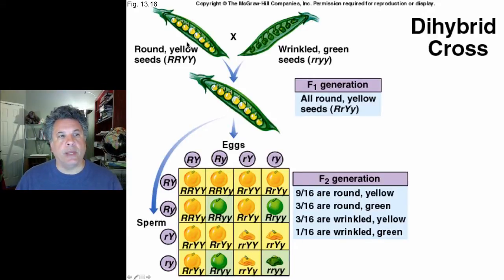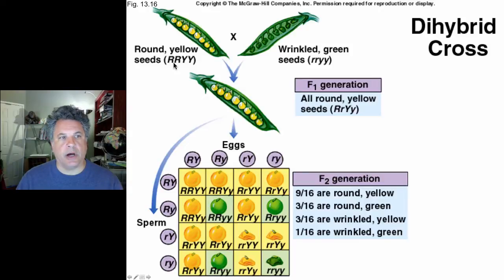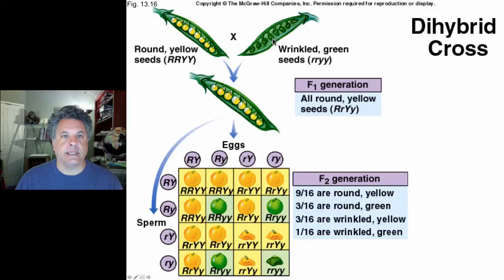We are following both pea texture — round or wrinkled — and pea color — yellow or green. The allele symbols for these traits are as follows: large R signifies round peas, small r signifies wrinkled peas, large Y signifies yellow peas, and small y signifies green peas.